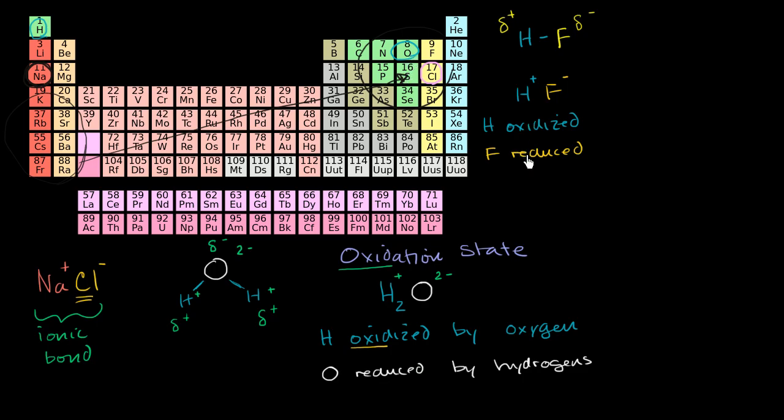Now, there are other mnemonics that you might see for remembering what oxidation and reduction actually represent. And I'll introduce those to you, just because they might be helpful and they are introduced in a bunch of chemistry classes. One of the mnemonics is LEO the lion says GER. And this is to remember that losing an electron means you are being oxidized, or losing electrons is oxidation, and gaining electrons is reduction.